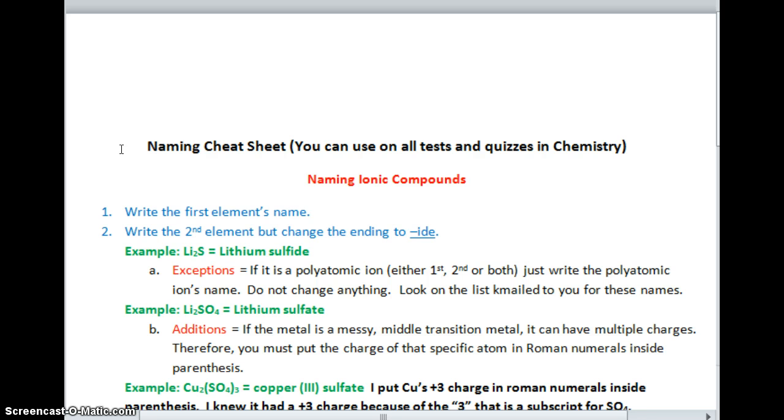So far we've been naming ionic compounds. We just write the first element's name, write the second element's name, but change the ending to -ide. Example: lithium sulfide. Exceptions: if it's a polyatomic ion, either first or second or both, just write the polyatomic ion's names. Do not change anything. Look at the list for these names. Li2SO4 - I have more than two elements. I know that because I have more than two capital letters. Capital letters are very important in chemistry. I know this is my polyatomic ion sulfate by looking on the list. So, lithium sulfate.